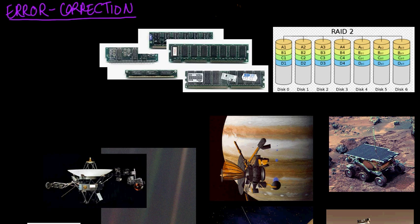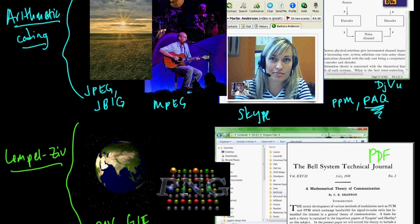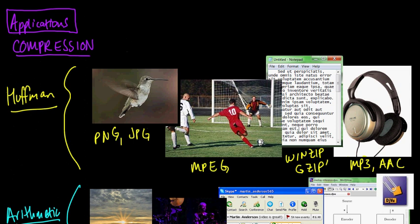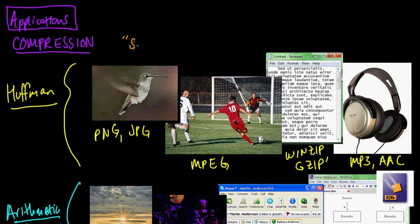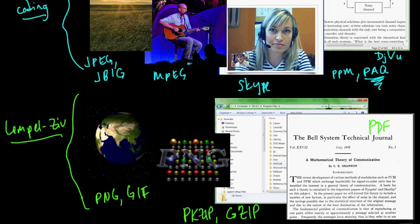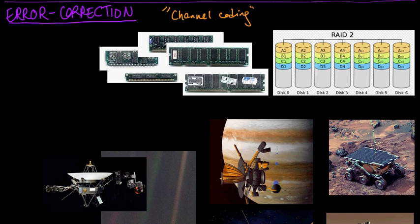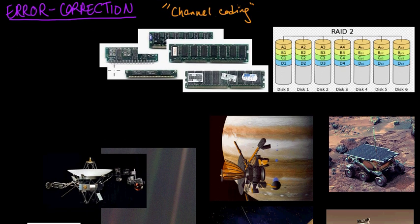Continuing our tour of applications of coding methods and information theory, in this video we're going to look at some applications and examples of error correction codes. Error correction coding is also referred to as channel coding. In the previous video we were looking at applications of compression codes, also referred to as source coding.